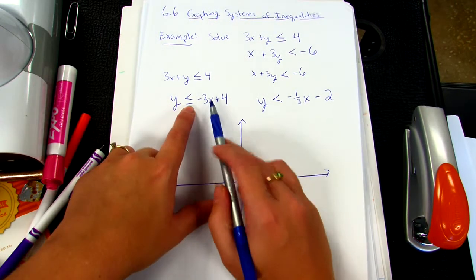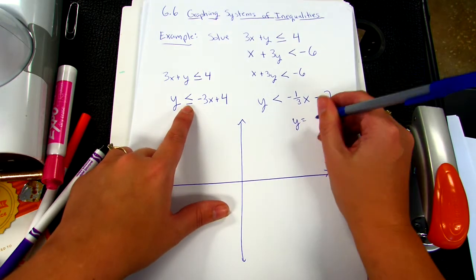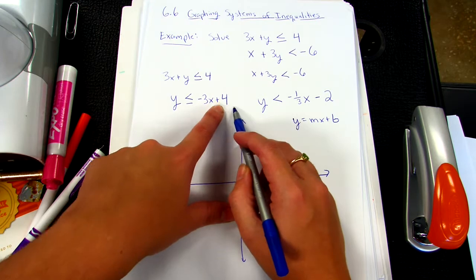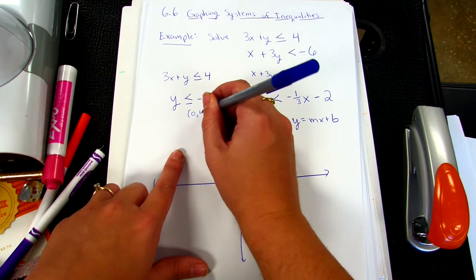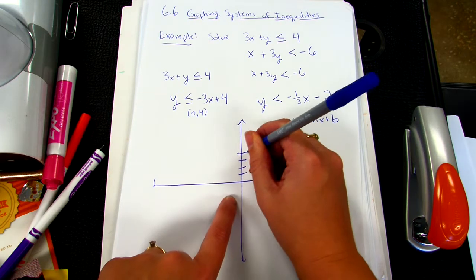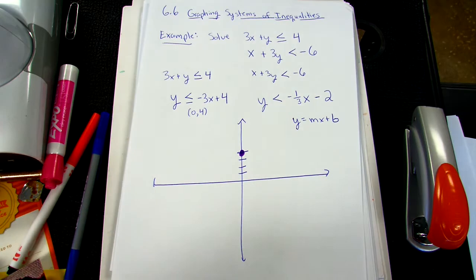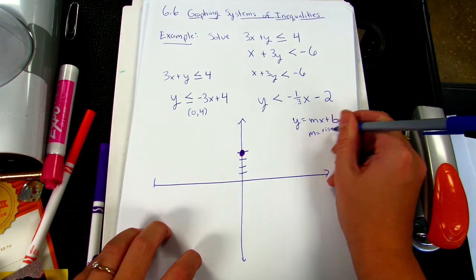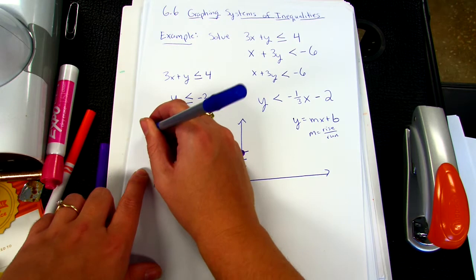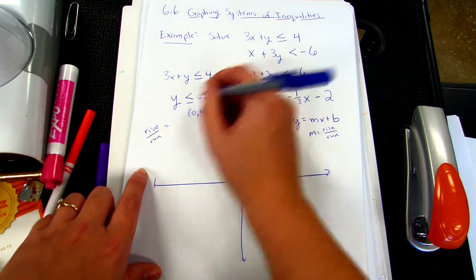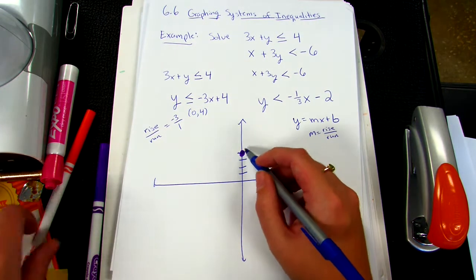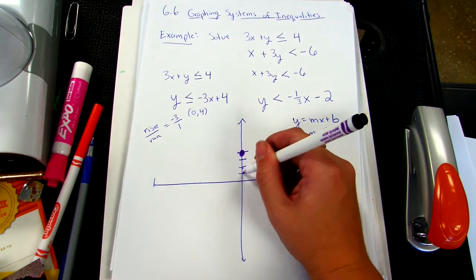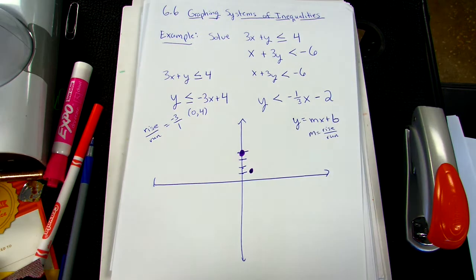Our first equation is negative 3x plus 4. Remember, when you have y equals mx plus b for a linear equation, you can graph it simply. First, plot your y-intercept — this one would be (0, 4). Then use your slope m, which is rise over run. Here, m is negative 3 over 1. So rise negative 3 and run 1, and you end up at the next point.